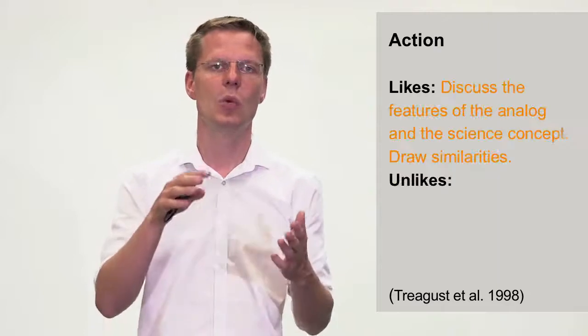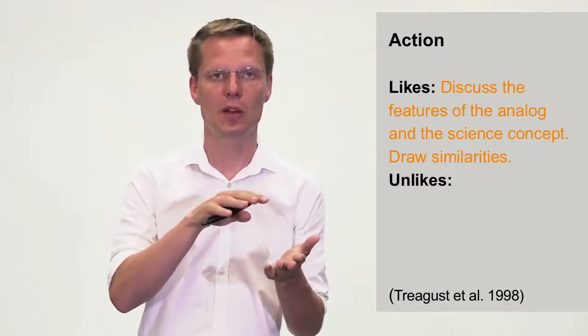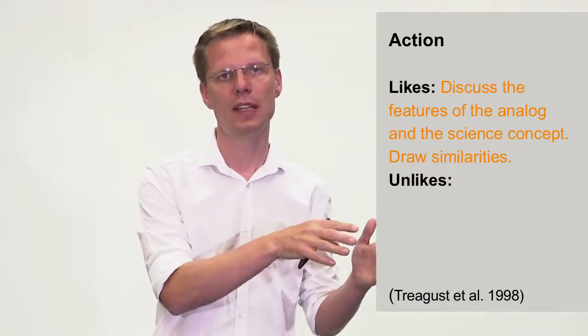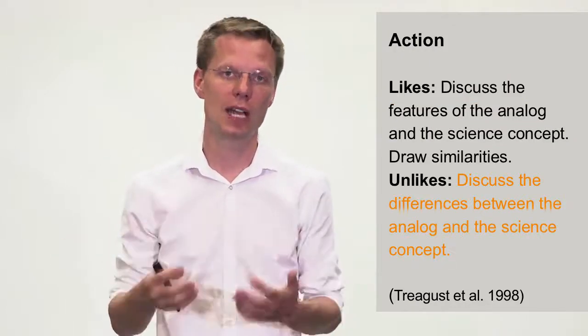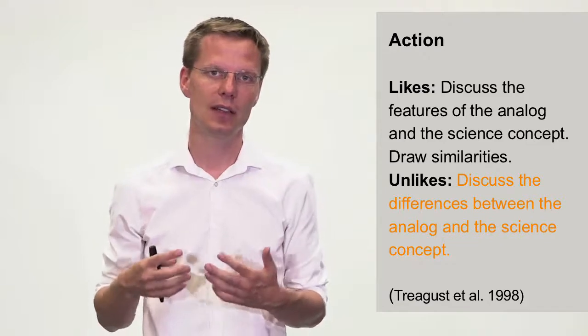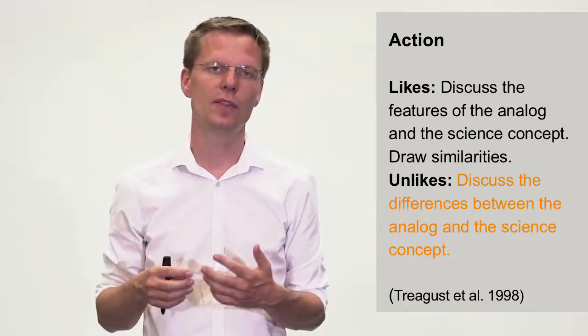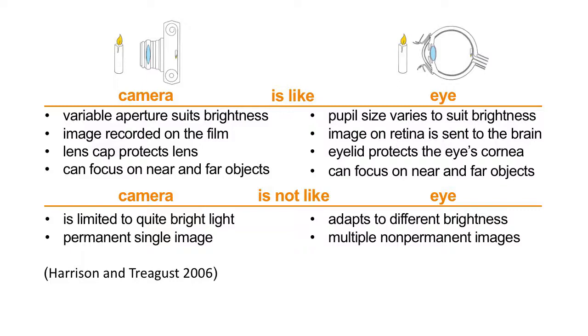So you have to communicate where does it work? Where can we compare features from the analog to the target? And where can't we do this? Where does the analogy break down? So for example, the camera is like the eye. There you can compare the cap of the objective with the eyelids to protect. Or you can compare the idea that you can focus the camera with how you can focus with the eye.